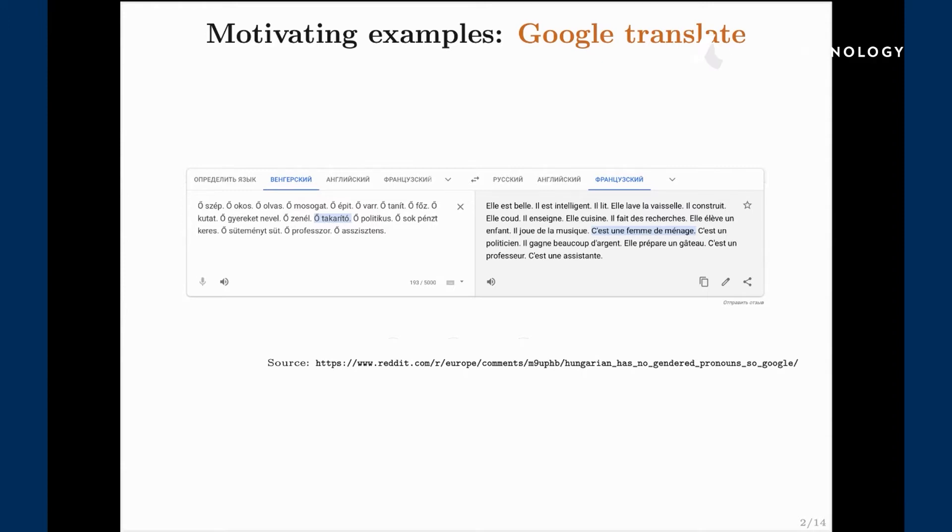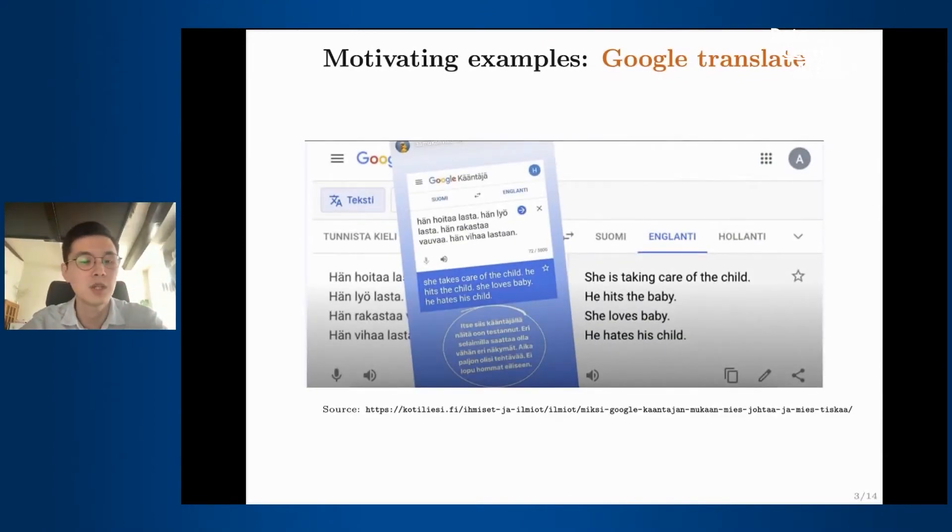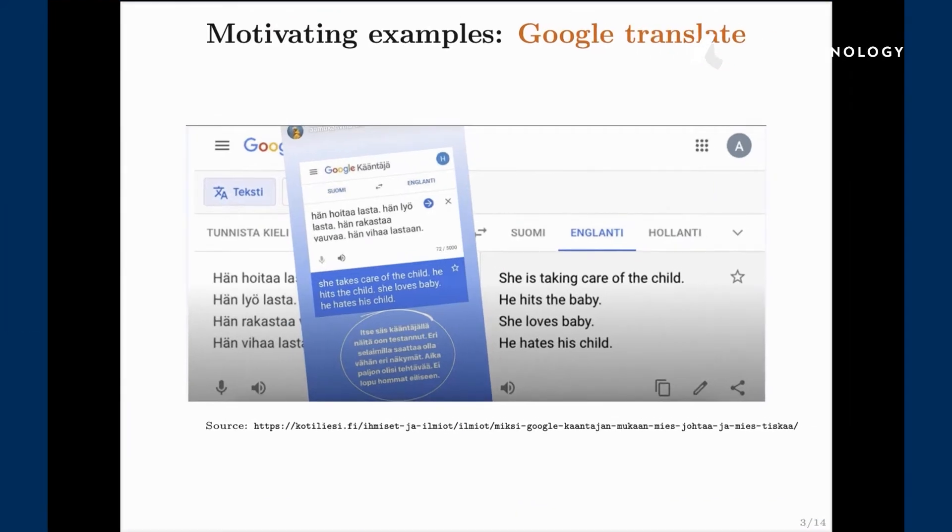It's very clear that there are certain biases. Google Translate makes a choice here and it's quite a sexist way of translating. But it can actually go in the other direction as well, it can also go against men. Here's an example of translation from Finnish where it's also possible to make a gender neutral sentence to English. We see that she's taking care of the child but he hates the baby, she loves baby but he hates his child.